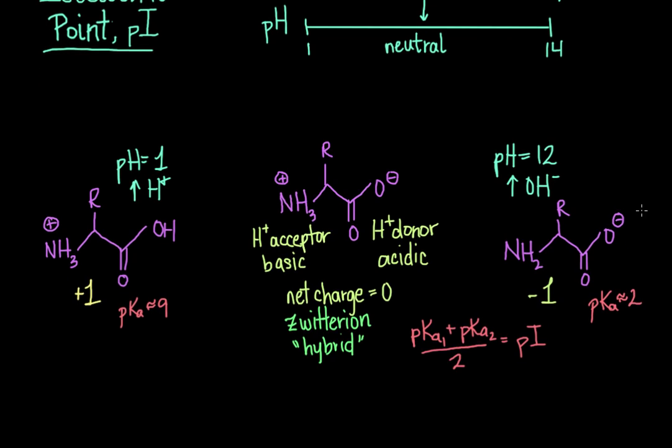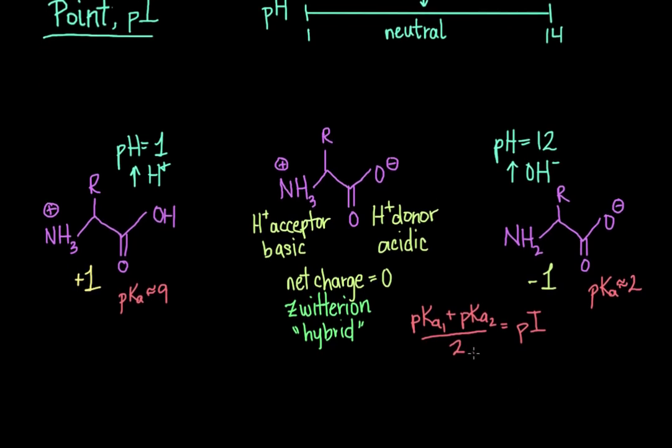So now if we just give ourselves a little bit more room here, we can calculate what the pI or isoelectric point would be for our generic amino acid. So taking the average pKa for the amino group and then the average pKa for the carboxylic acid group, and we divide by 2, then we get 11 over 2, and we come to an isoelectric point of 5.5.